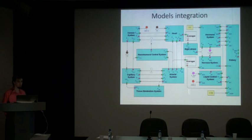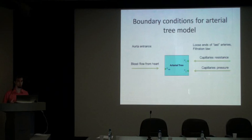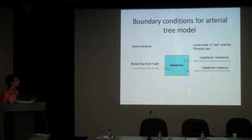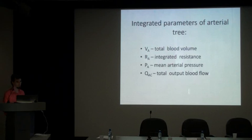First, we remove it. Then we place the arterial tree model at that location, set boundary conditions to it — we set blood flow from the heart on the entrance of the aorta, and the peripheral resistance and pressure on the output of the arterial tree. We connect those parameters for the arterial tree simulation and establish those connections. Now we want to get some feedback from the arterial tree, so we add calculation of average parameters — total blood flow, integrative resistance, and so on — and pass them back.